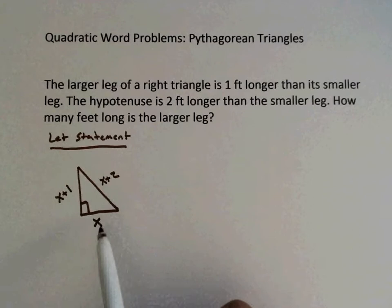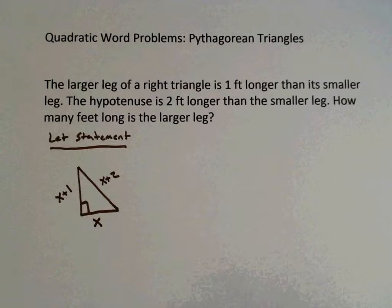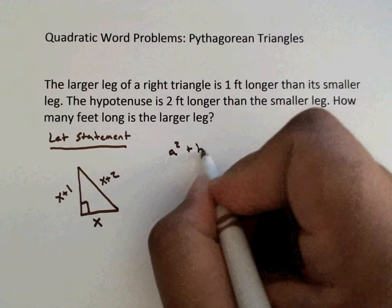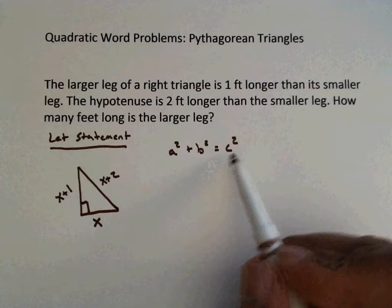In this problem, in order to find out what X is, we need some type of relationship, some type of formula that is always true about this specific type of right triangle and its size. A lot of you probably remember Pythagorean's theorem, which is A squared plus B squared equals C squared.